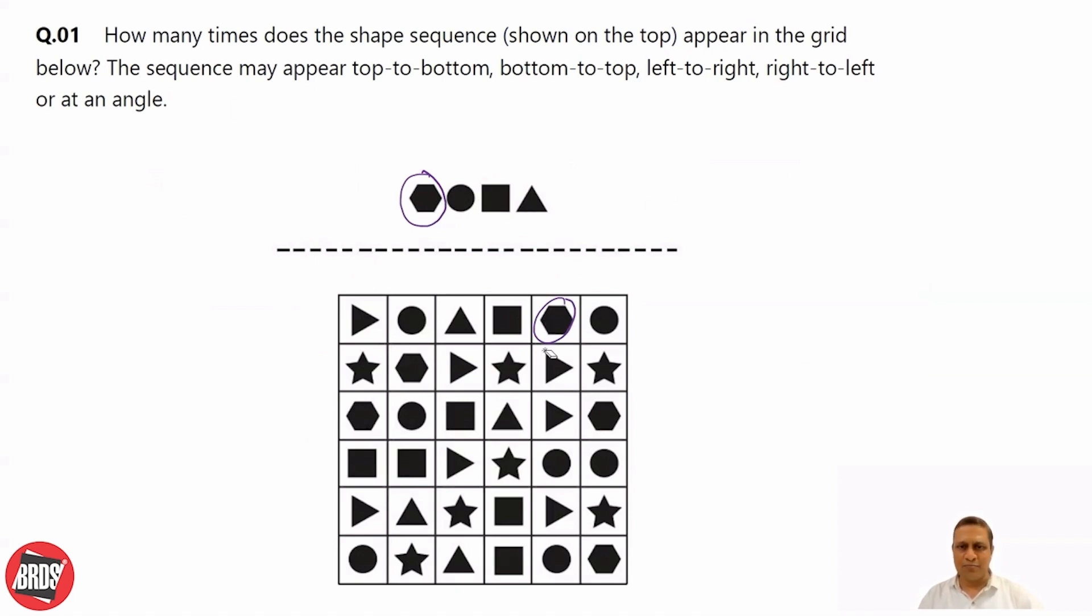Do we have circle, square, triangle? Circle is there, but square, triangle we don't have. Then we move further.